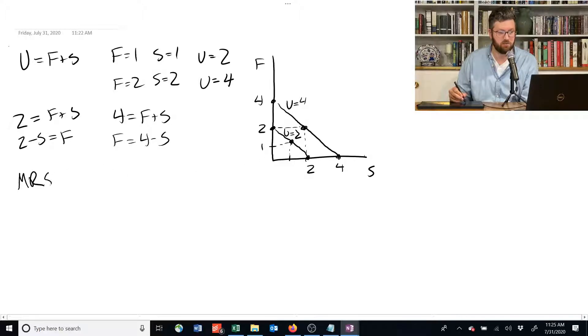To find the marginal rate of substitution, we've got two approaches. We can take the partial derivative of f and s using one of these indifference curves. If we did that, the derivative here is pretty obviously negative 1.